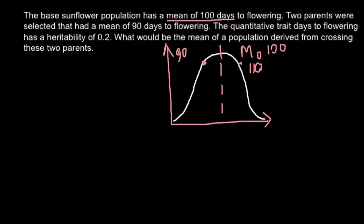And for agriculture, this is very important. If you are able to make a new cultivar or variety of any plant that gives you a harvest 10 days earlier than your competitors, you can earn a lot of money. So let me place the new mean of our selected parents here — we call this MS, mean of selected parents.